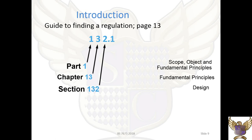Through the regs book, you will see many different types of regulations and numbering. This is how the numbering works: the first number of your regulation refers to the part, the first two numbers combined refer to the chapter, and all three numbers refer to the section.